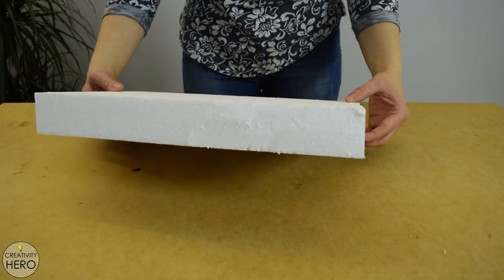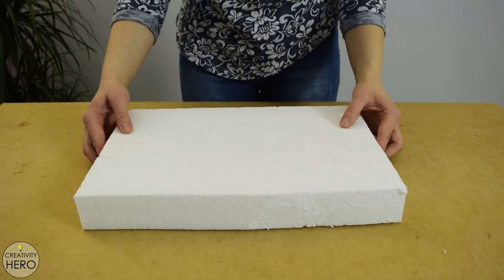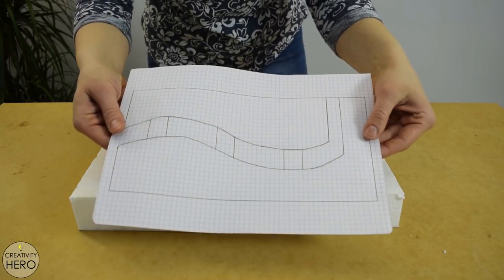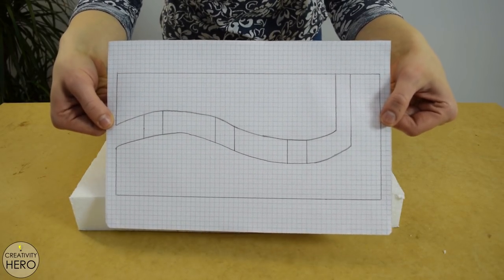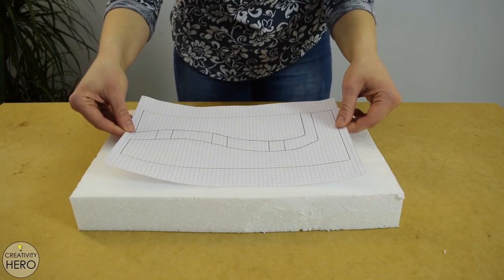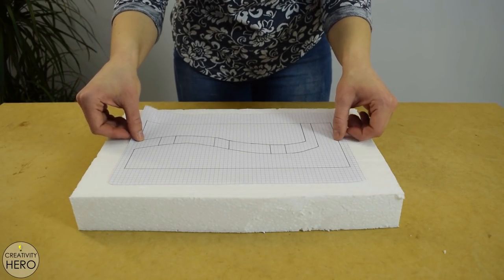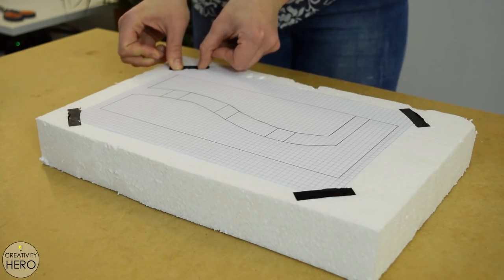To make the mold for the concrete I took a 5 cm thick styrofoam board. On a piece of paper I drew the desired shape of the concrete form and then stuck it onto the styrofoam board with duct tape to prevent any movement while cutting.